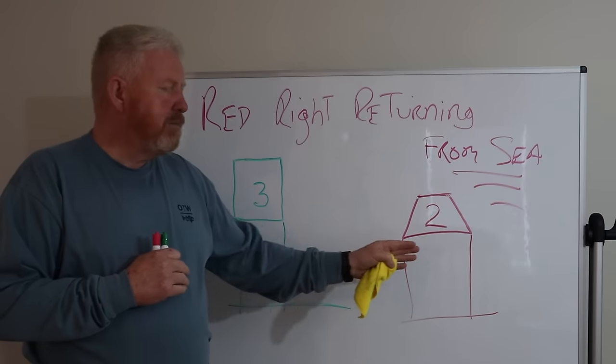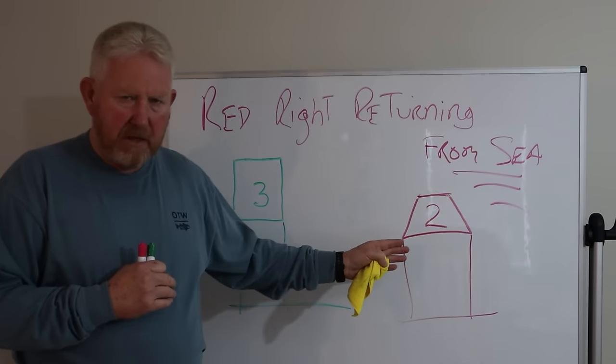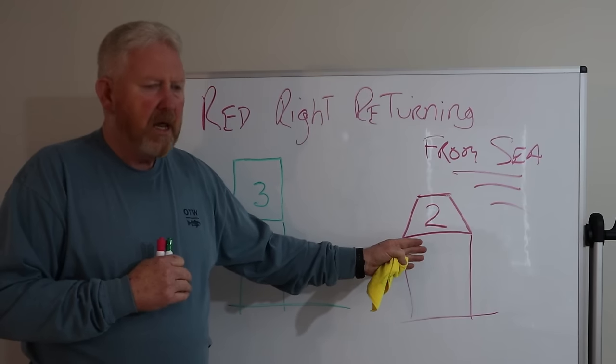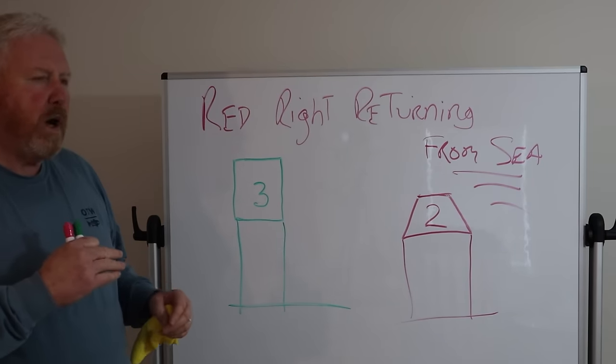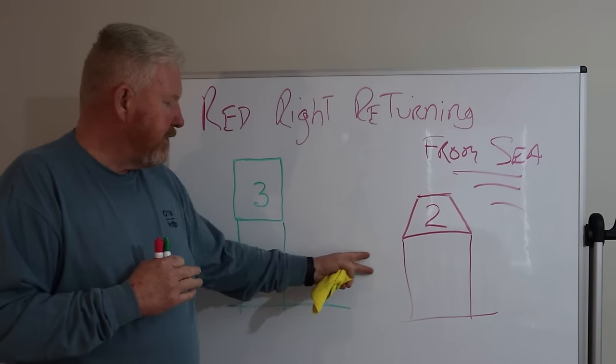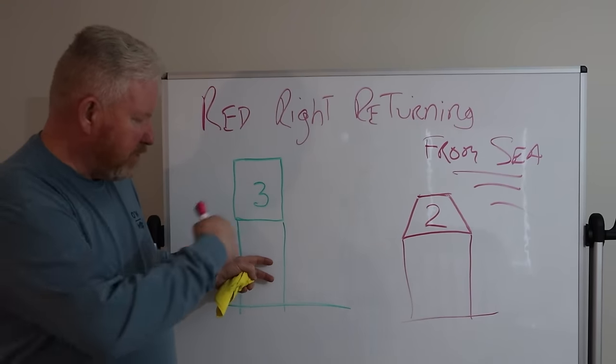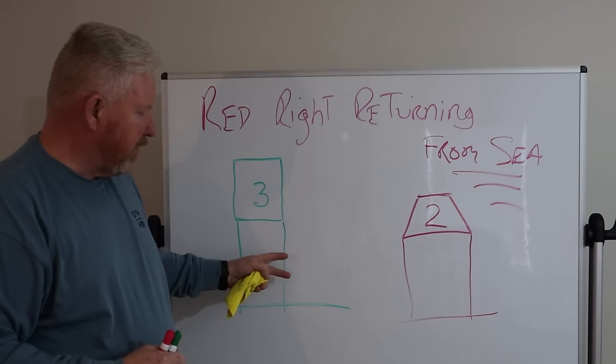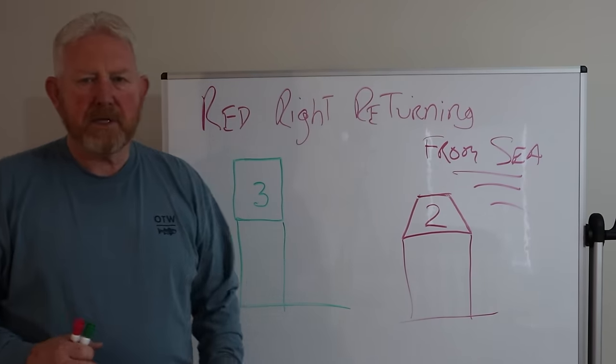Having said that, buoys are always set on the edge of the channel. They're not in the middle. They're on the edge. So what these are telling you is if you're going to take this down the right side, there's good water over here. Vice versa. If there's no red buoy and there's just a green, you're going to take that down your port side and good water's over here.